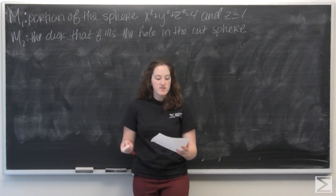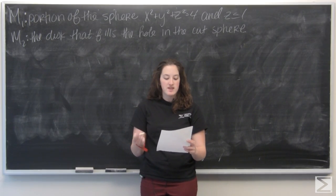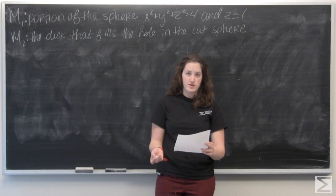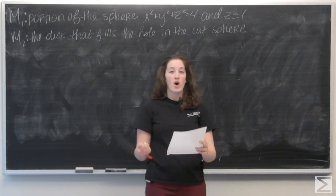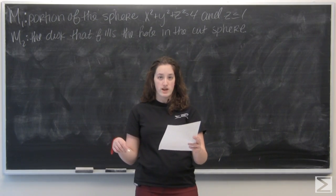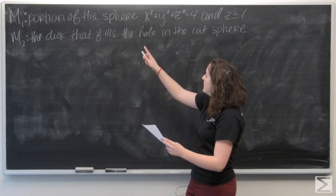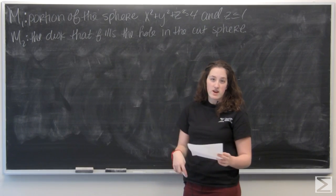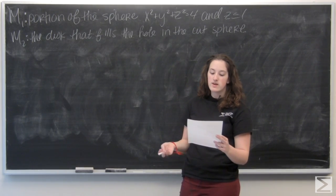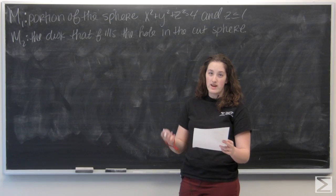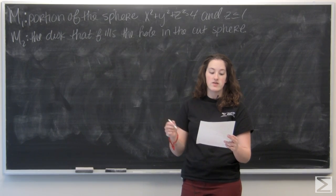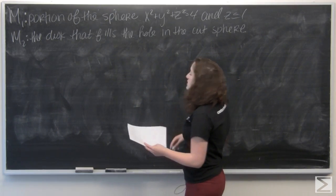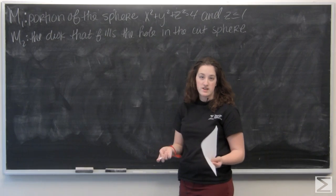For this problem we're asked to calculate the surface area of the piecewise regular surface M1 union M2, where M1 is the portion of the sphere x squared plus y squared plus z squared equals 4 and z is less than or equal to 1. M2 is the disk that fills the hole in the cut sphere.